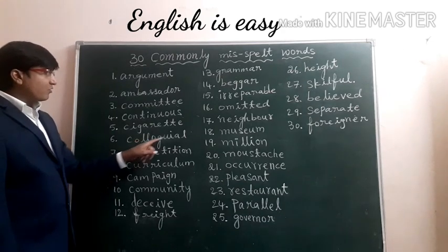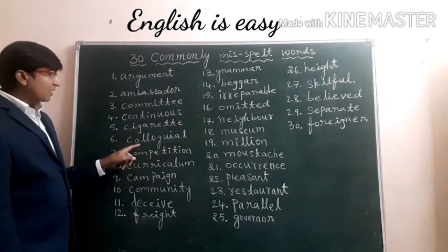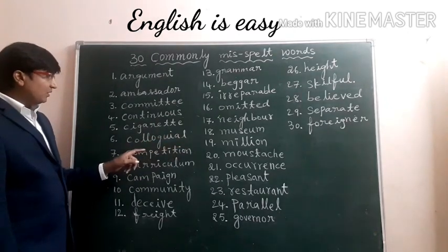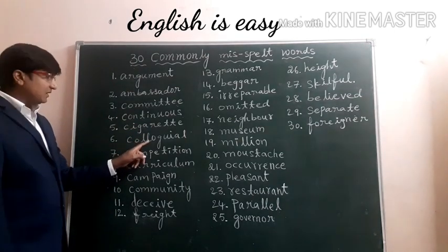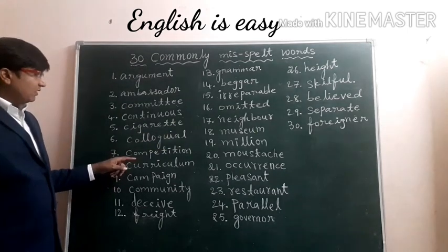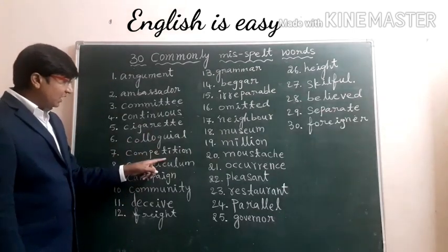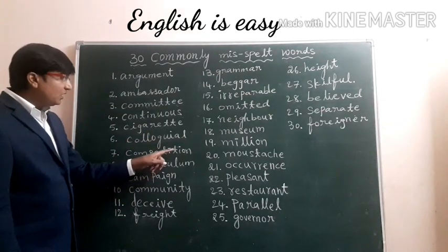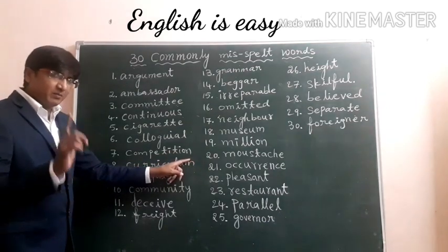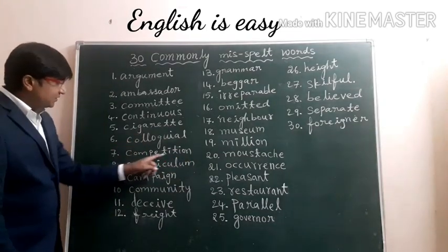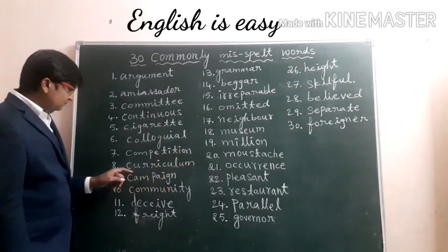Sixth one: Colloquial. Remember, this word's pronunciation is 'colloquial.' Even in this word, we have to write double L, not single L. Seventh one: Competition. Children do a mistake by writing only T-I-O-N. They won't write the full T-I-T-I-O-N. But remember, when we write the word competition, we have to write C-O-M-P-E-T-I-T-I-O-N.